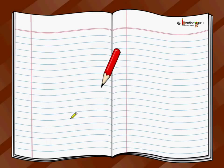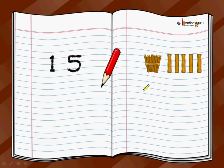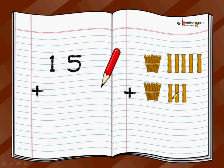We write it: 13 plus 12 is equal to 25. Let us take another problem. I have a bundle of 10 plus 1, 2, 3, 4, 5 — that is 15 sticks — and I got 13 more sticks: 10, 11, 12, 13.